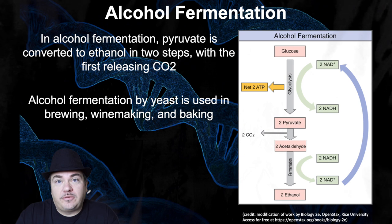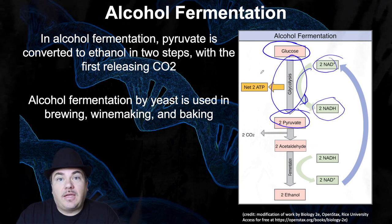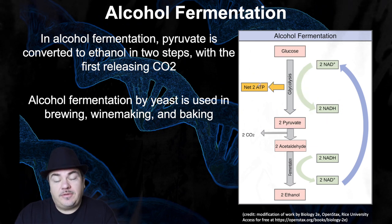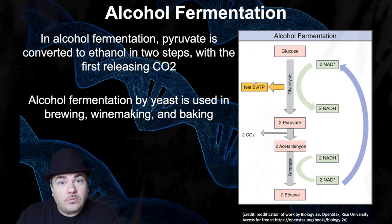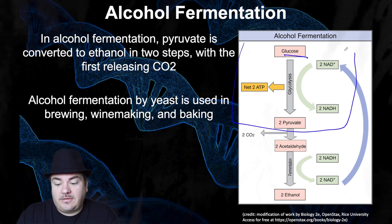Let's talk about alcohol fermentation to start. In alcohol fermentation, you take glucose and then you do the process of glycolysis to turn it into pyruvate. Along the way, you turn 2 NAD+ into 2 NADH, and you charge up two net ATP molecules. That should sound very familiar because you learned about that process when you learned about aerobic cellular respiration. The only ATP that's made during fermentation is the ATP that's made during glycolysis.